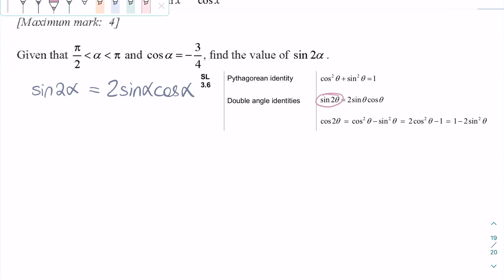Since we already know the numerical value of cosine alpha, we already have one part of this figured out. So now we need to figure out how to isolate and get sine alpha.